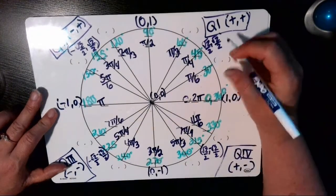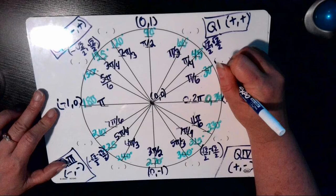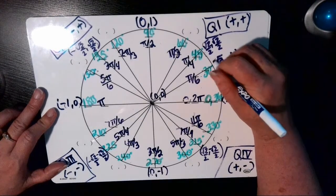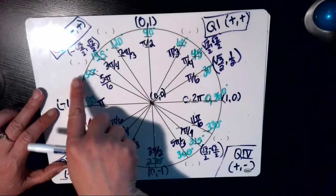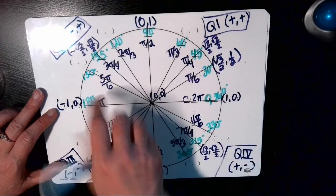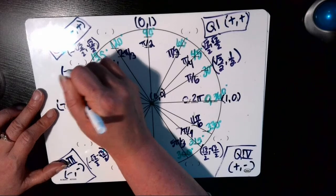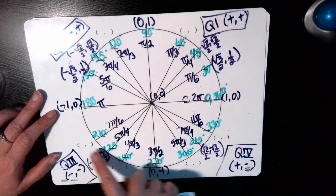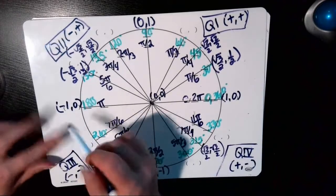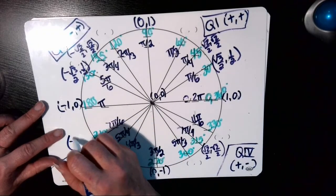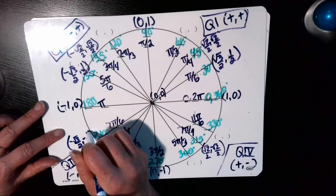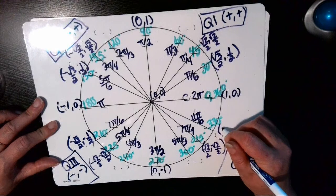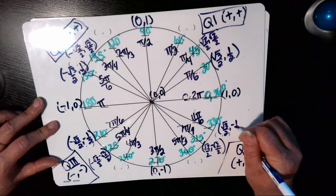So at pi over 6, this is going to be root 3 over 2 comma 1 half. And if I reflect that then into quadrant 2, that gets me to 5 pi over 6. So that coordinate is negative root 3 over 2 comma positive 1 half. I reflect into the third quadrant, that's 7 pi over 6. That's going to be negative root 3 over 2 negative 1 half. Reflect into quadrant 4 at 11 pi over 6. That's positive root 3 over 2 negative 1 half.